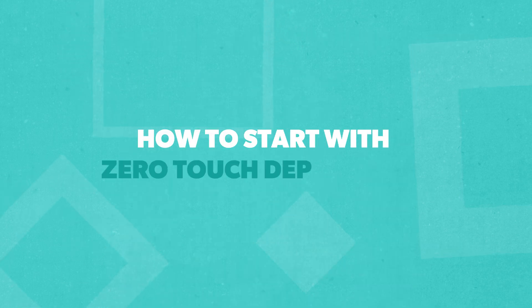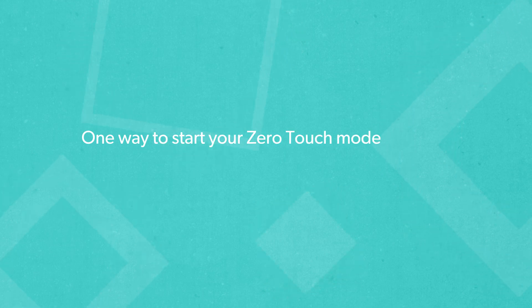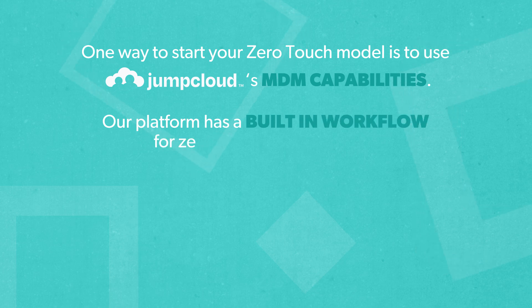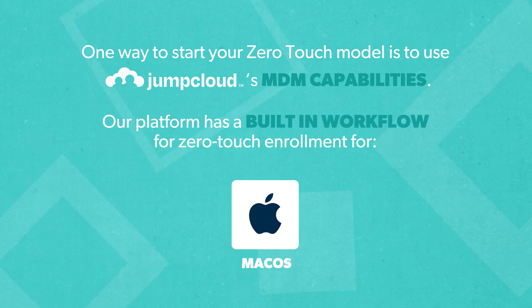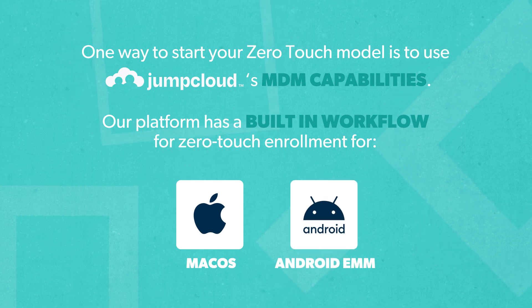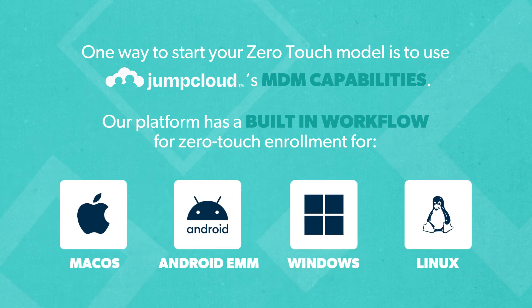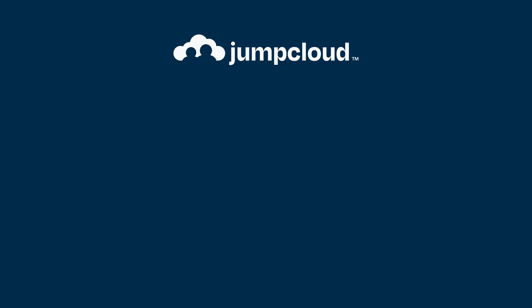So what would zero-touch deployment look like for your IT team? One way to start your zero-touch model is to use JumpCloud's MDM capabilities. Our platform has a built-in workflow for zero-touch enrollment for macOS in only three steps. Android EMM is also included on the JumpCloud platform, and we have a lot of ways for IT admins to implement zero-touch on Windows and Linux machines. To find out more, visit our JumpCloud blog, and if you liked what you learned, subscribe to our YouTube channel.